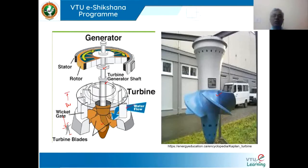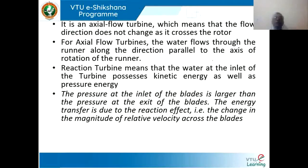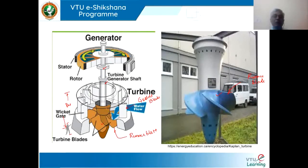This is the wicket gate, also called the guide blade. And this is called the runner blade. It is an axial flow turbine — the water moves parallel to the runner and exits parallel to the runner. That means the draft tube will be below, and the water flows directly downward after the runner rotates.